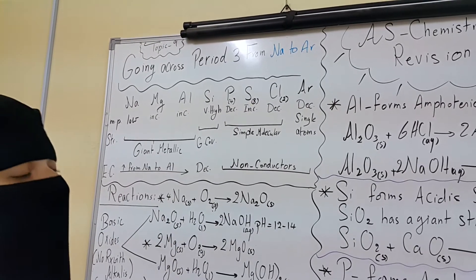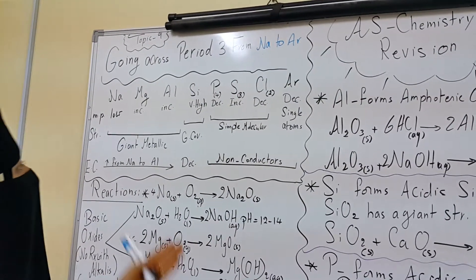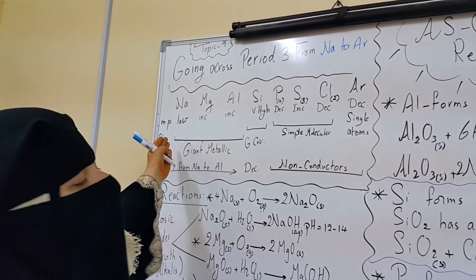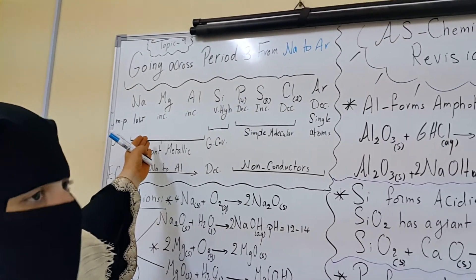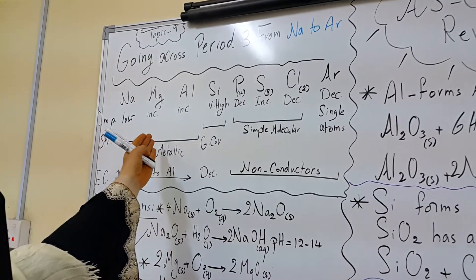The number of valence electrons increase and this increases the electrostatic attraction forces between the metal positive ions and the metallic lattice. And this increases their melting point.